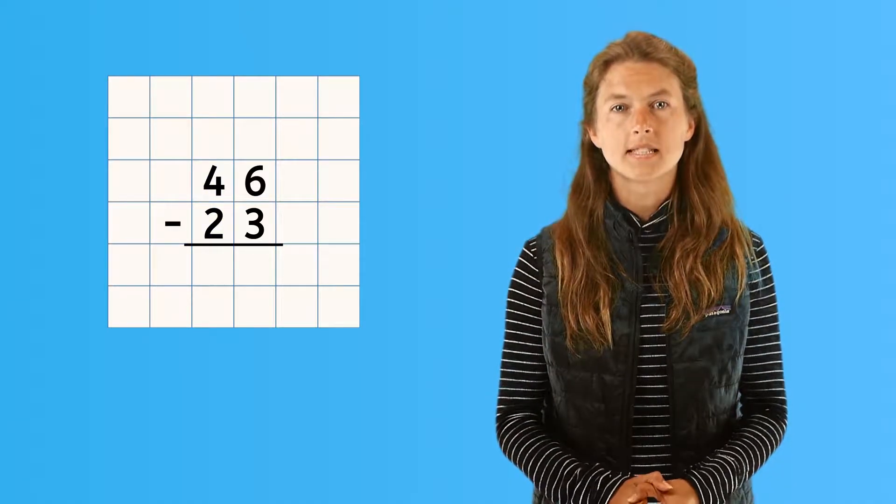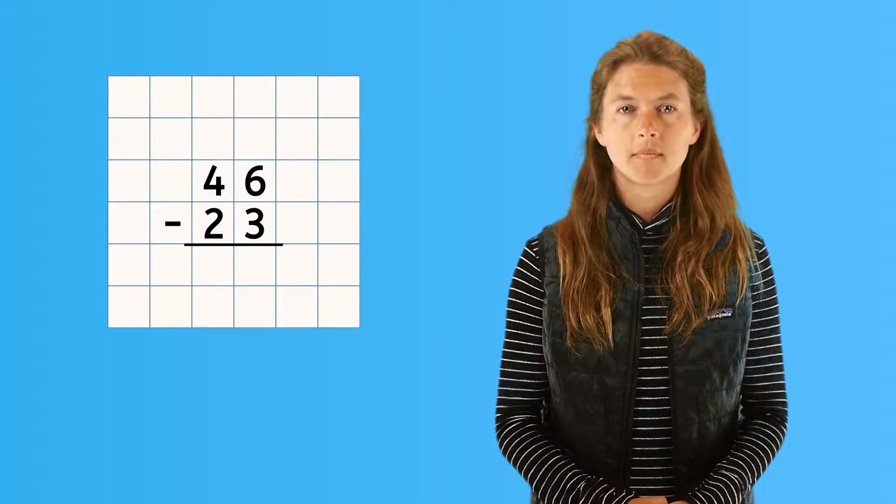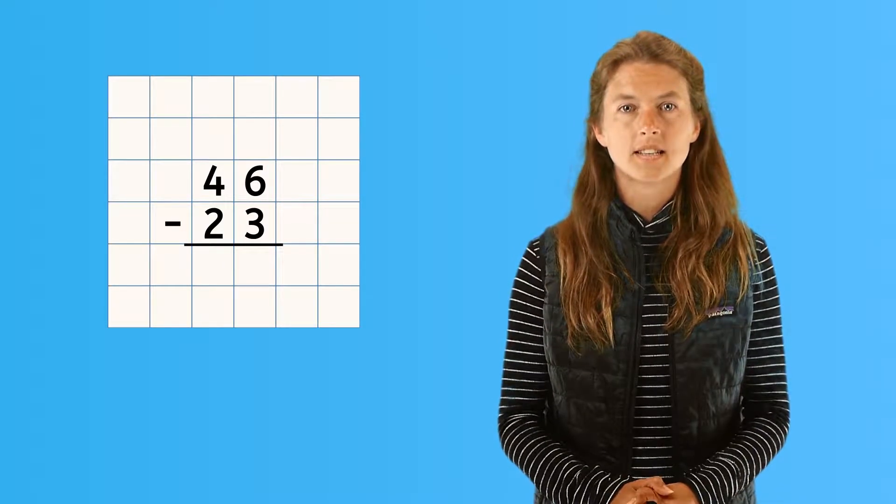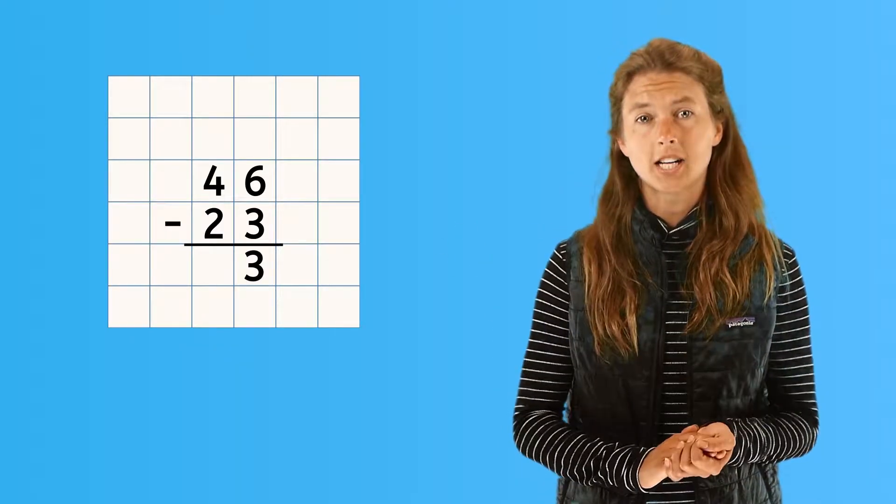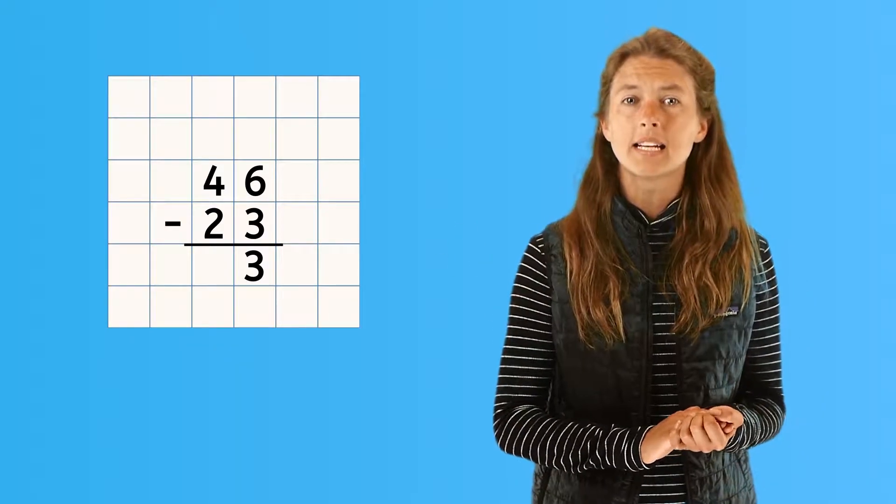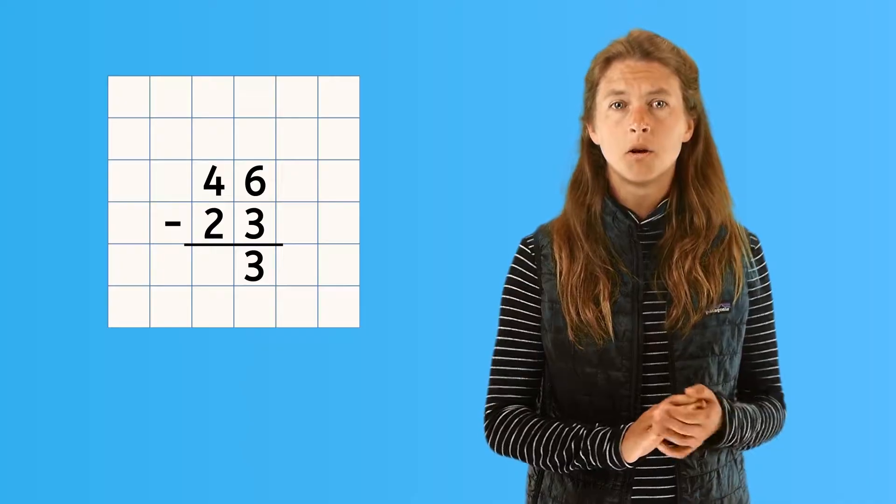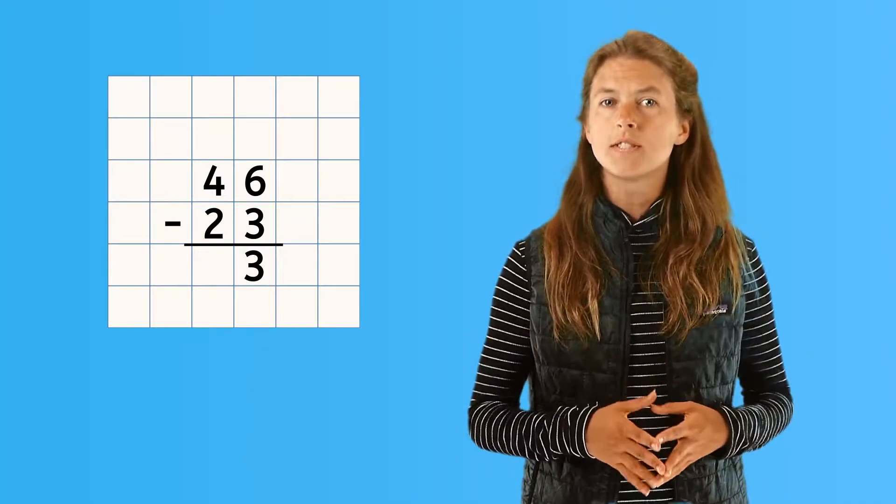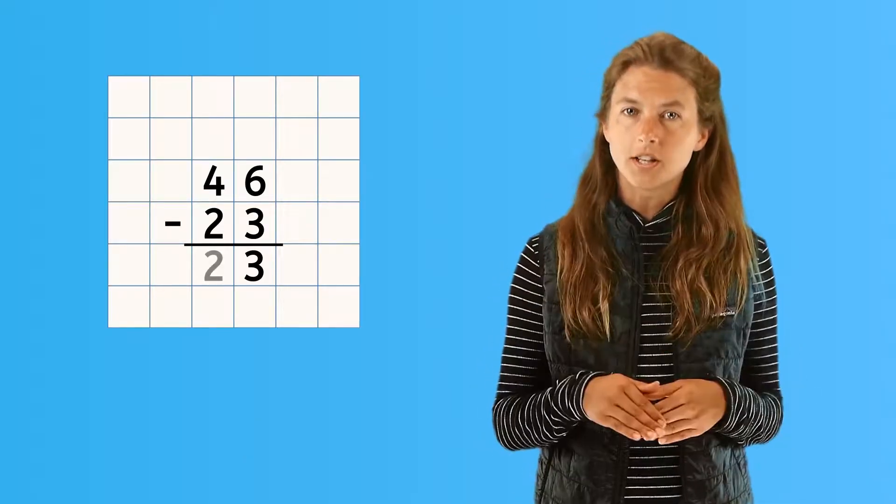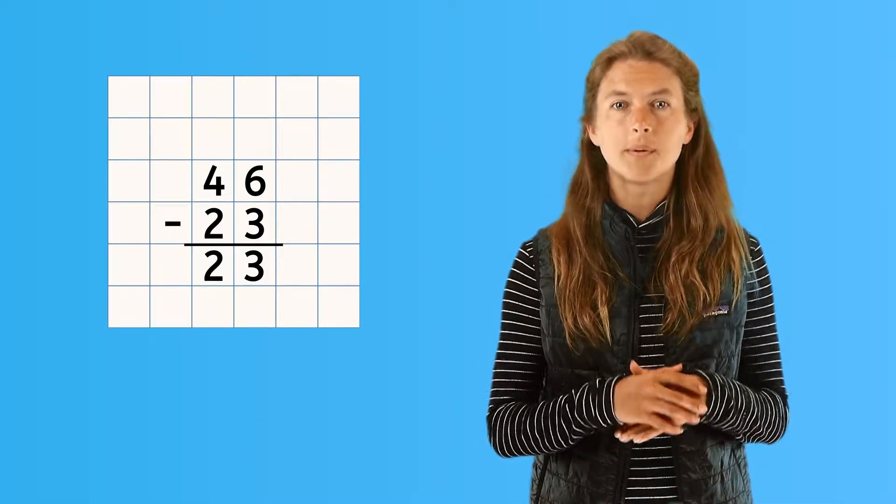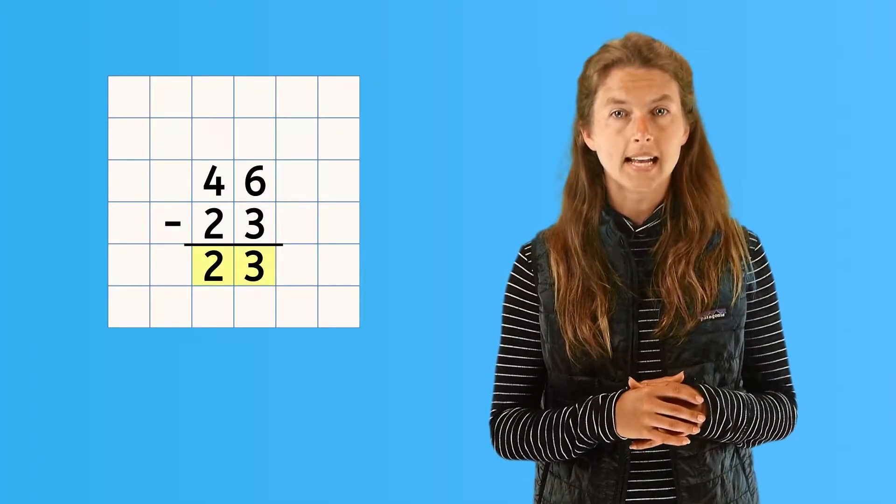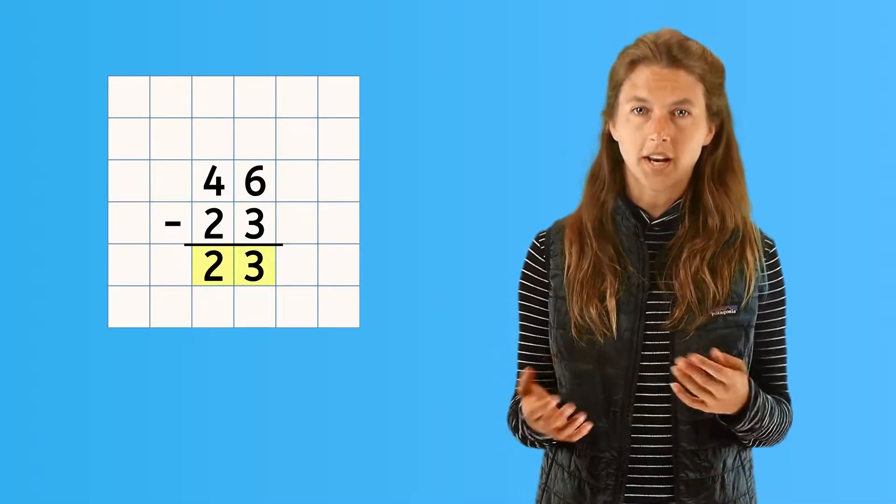Let's subtract the ones place in our problem. Six ones minus three ones is three ones, write the three under the subtraction line, and remember to keep it lined up with the ones place. Moving on to the tens place, subtract four tens minus two tens, which equals two tens. Write the two under the subtraction line and keep it lined up with the tens place. The end result is two tens and three ones, or twenty-three.